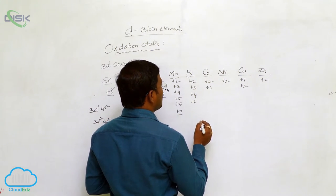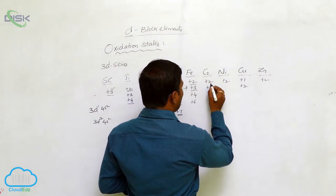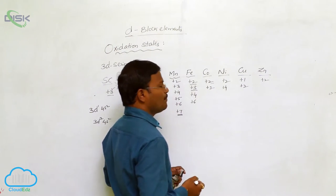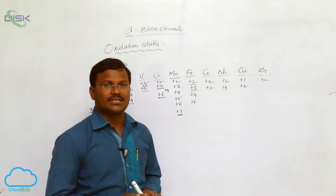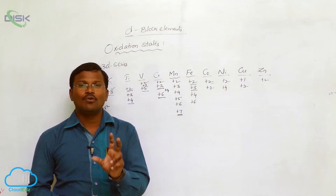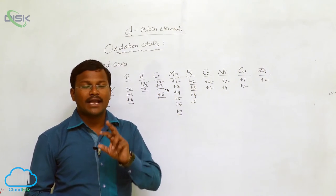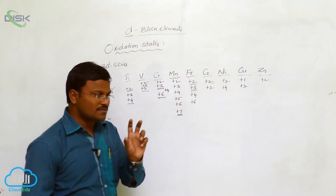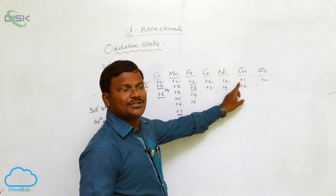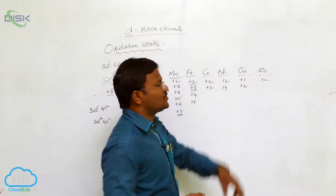For iron, the most familiar oxidation states are plus 2 and plus 3, very rarely plus 4 and plus 6. For cobalt, plus 2 and plus 3 are common. Nickel shows plus 2 and sometimes plus 4. Copper shows plus 1 and plus 2. When any element exhibits variable valency, the lower oxidation state species is called 'us' (e.g., cuprous for Cu+) and the higher oxidation state species is called 'ic' (e.g., cupric for Cu2+). The general oxidation state of zinc is plus 2.